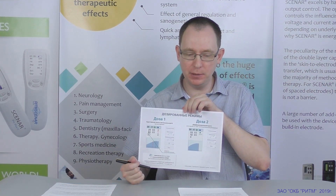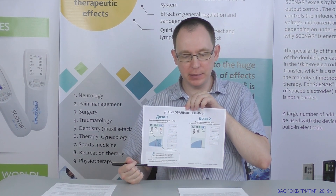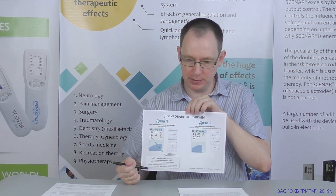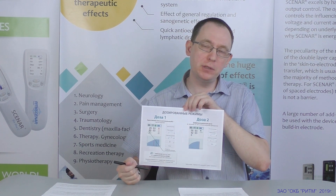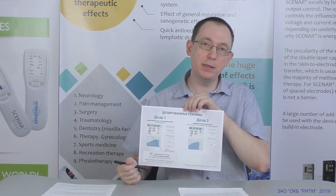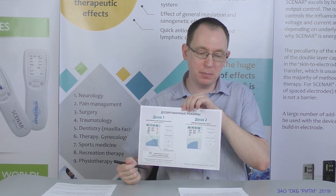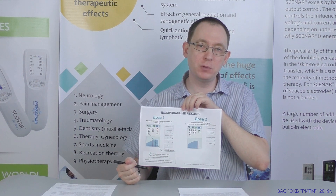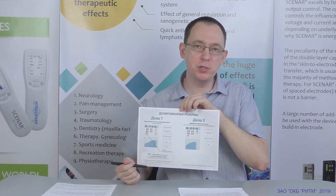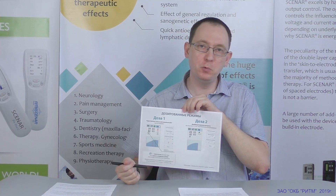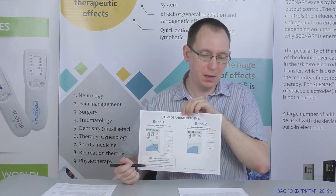Dose 1 is also called an adaptive dose. This is an expert mode. D1 is the universal mode with the visualization of the feedback parameters. It is used for systemic therapy, diagnostics of the functional state, and the so-called minimum sufficiency treatment. This mode, which was developed in Rhythm-OKB-Zell based on major research, is unique. Its algorithm contains the company's know-how that makes it impossible to copy.